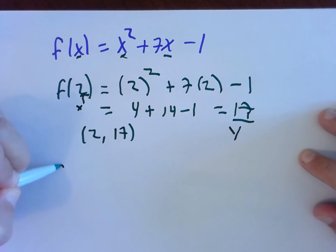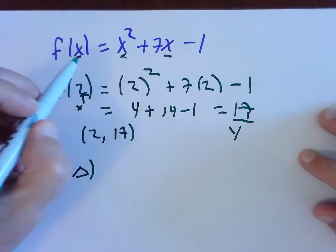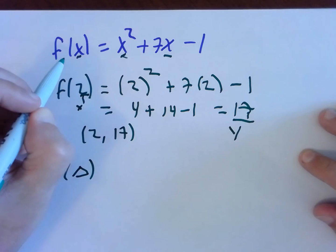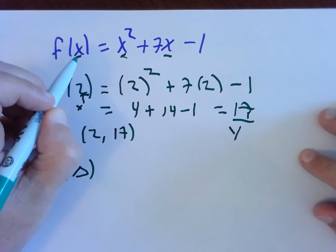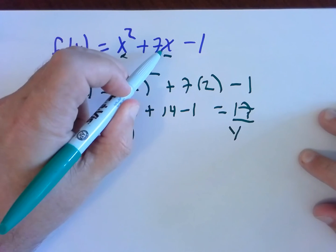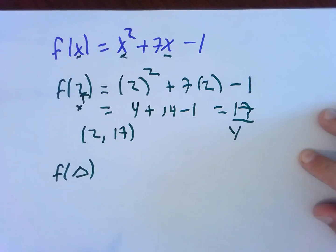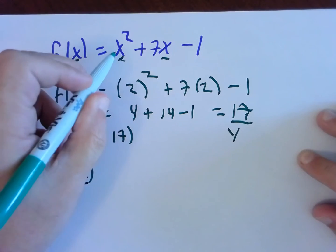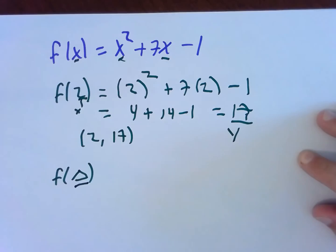Okay, what if we wanted f of triangle? Remember, the function has nothing to do with x. The function should really be written: f of input is input squared plus 7 times input minus 1. Whatever is here replaces all of the x's in parentheses.